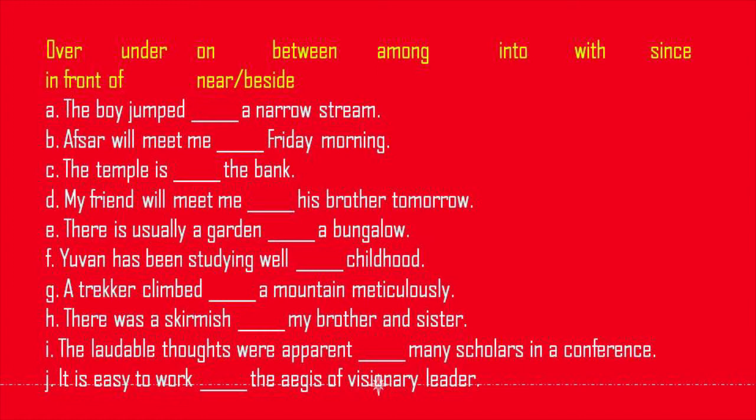Sentence 3: The temple is near a bank. Sentence 4: My friend will meet me, with his brother, tomorrow. Sentence 5: There is usually a garden in front of a bungalow. A bungalow — one has been studying well since childhood.